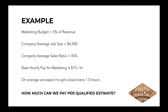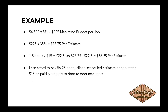If we want to spend five percent and we know our average job size is $4,500, that means we can spend $225 to get that $4,500 job. If we know that 35 percent of estimates result in a booked job, we take $225 and multiply by the 35 percent sales ratio. That means we can spend up to $78 per estimate generated in the business.